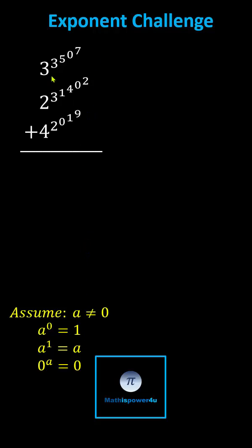Starting with the outermost exponents in the first term, 0 to the power of 7 is equal to 0 and 5 to the power of 0 is equal to 1, which gives us 3 to the power of 3 to the power of 1.